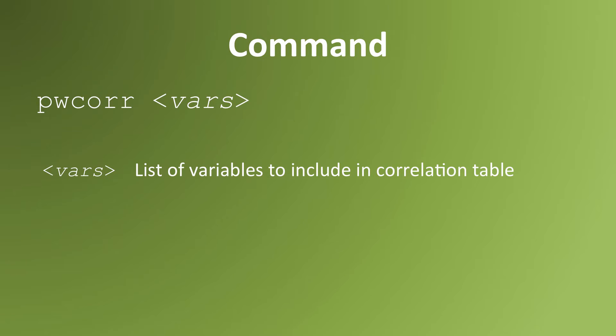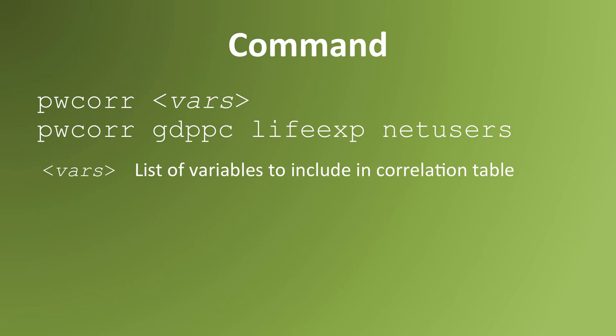We use the pwcorr command to get pairwise correlations. The syntax is pwcorr, and then a list of variables separated by spaces. This command will get you the pairwise correlation between three variables: GDP per capita, life expectancy, and internet users.